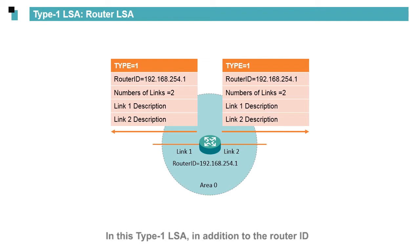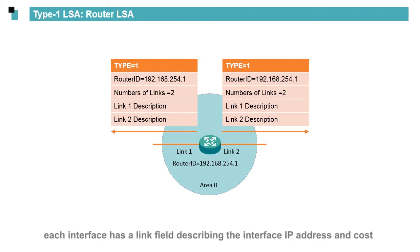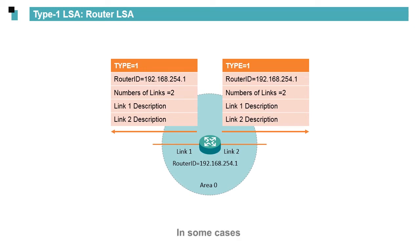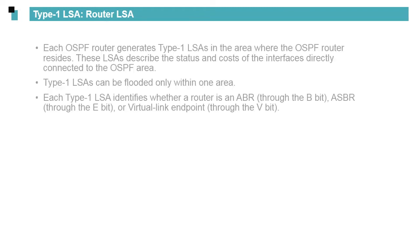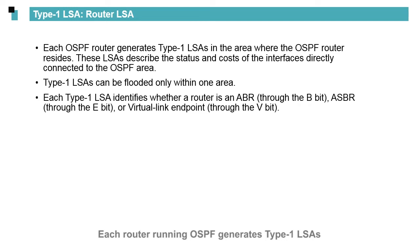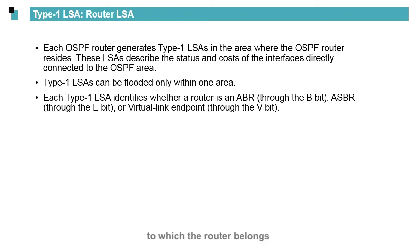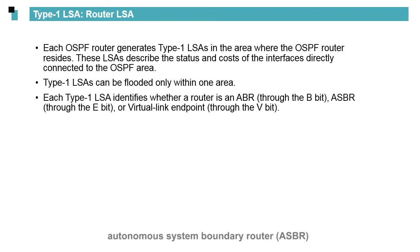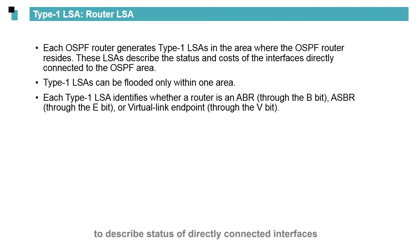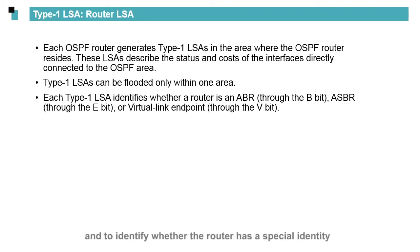In this Type 1 LSA, in addition to the router ID, each interface has a link field describing the interface IP address and cost. In some cases, interfaces may have more than one link field. Each router running OSPF generates Type 1 LSAs, and the Type 1 LSAs are flooded only in the area to which the router belongs. Type 1 LSAs identify whether a router is an Area Border Router (ABR), Autonomous System Boundary Router (ASBR), or Virtual Link Endpoint. In summary, Type 1 LSAs have two functions: to describe the status of directly connected interfaces and to identify whether the router has a special identity.